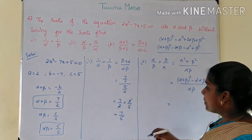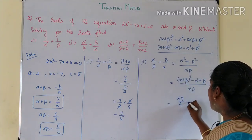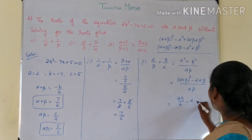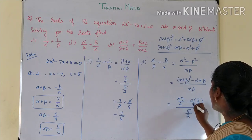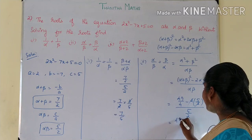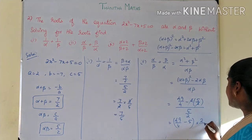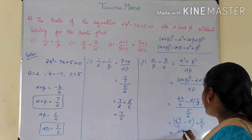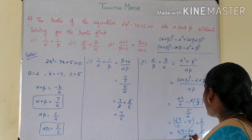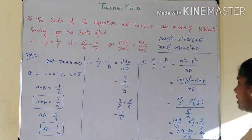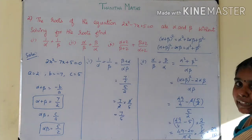Substituting values: alpha plus beta is 7/2, so (7/2)² = 49/4. Then minus 2 times alpha beta (5/2) gives minus 5. The numerator is 49/4 minus 5, which equals 29/4. Divided by alpha beta 5/2, we get (29/4) × (2/5) = 29 by 10. So the answer to α/β + β/α is 29/10.